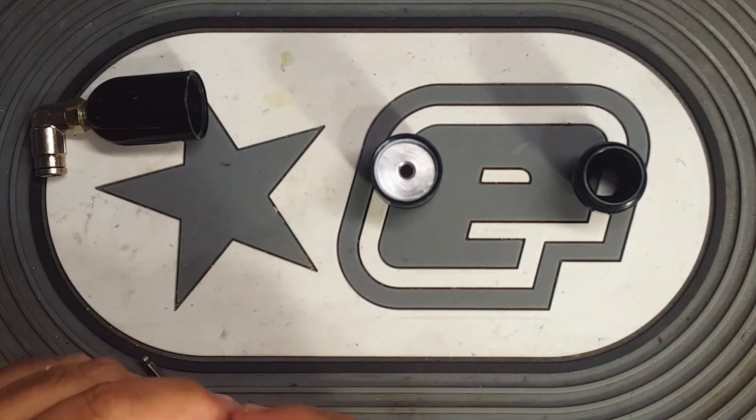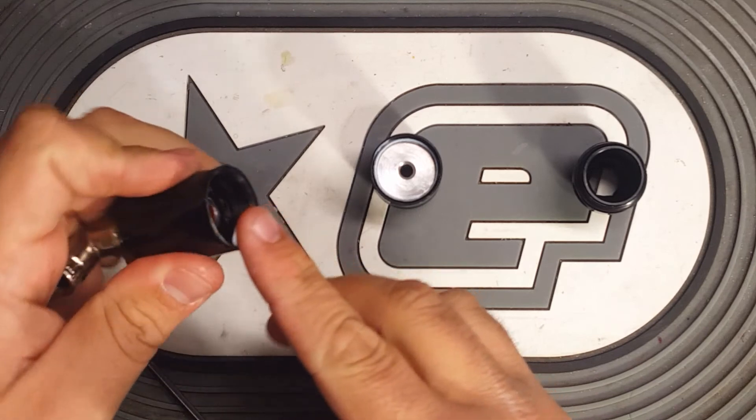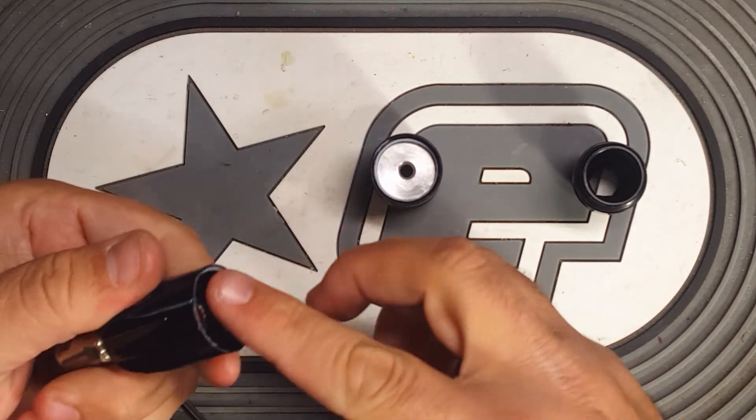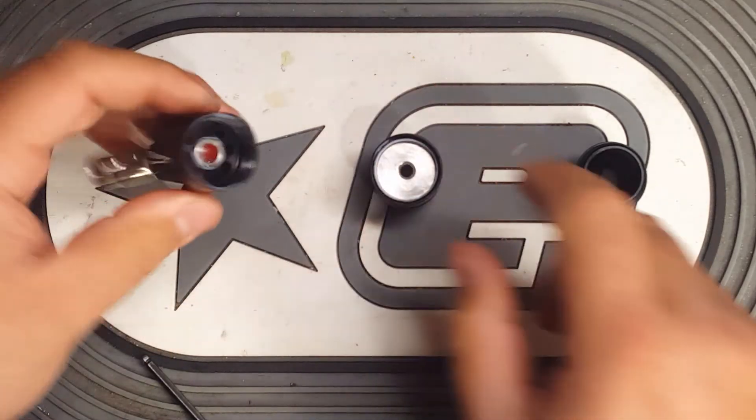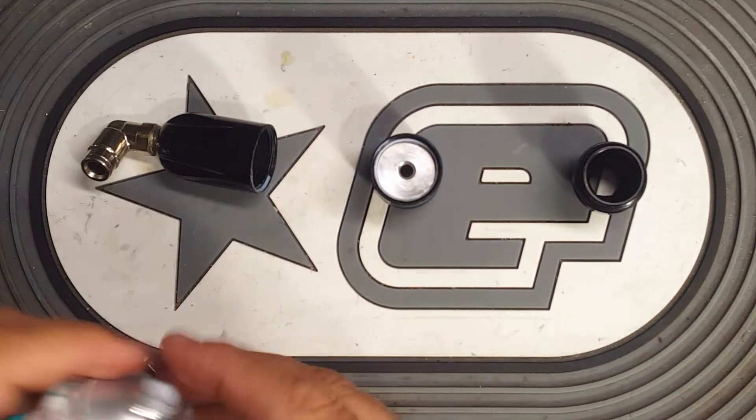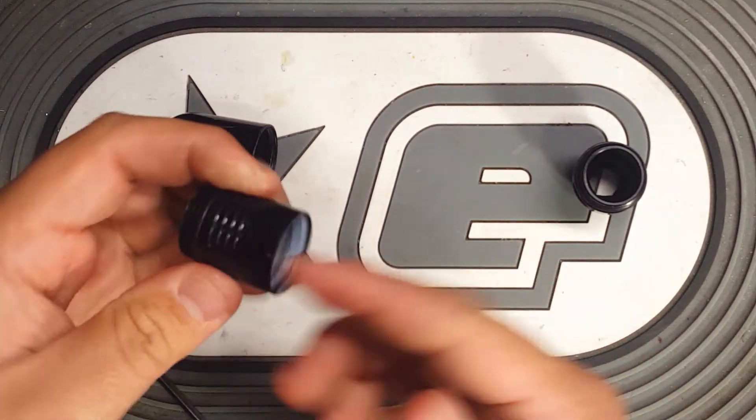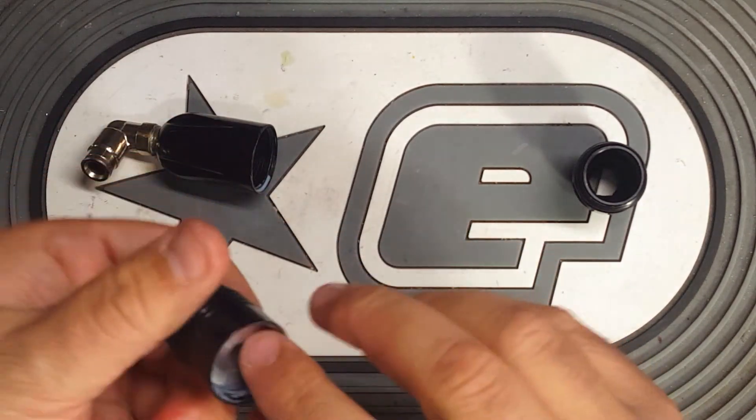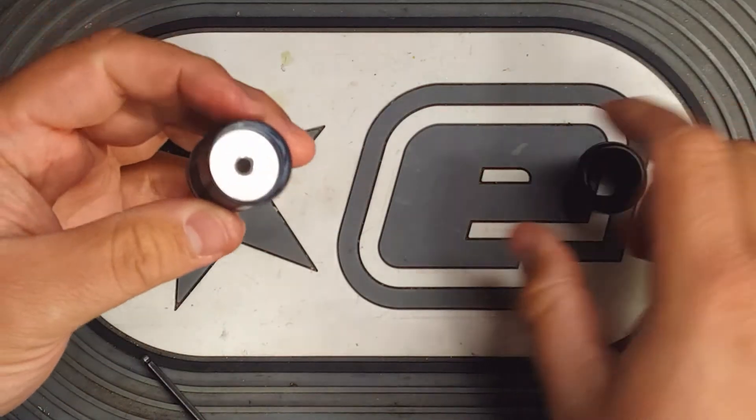Now for reassembly, to make sure that these parts all come apart easy, I like to put a little bit of grease around the inner edge where those 018s are going to seal. So once those reg housing pieces go back together, the O-rings are sealing with grease so that they don't get stuck real hard.